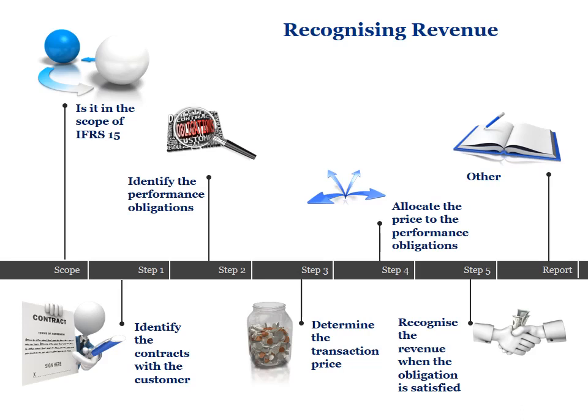Step 1 of the five-step model requires an entity to identify the contract with the customer. It provides the definition of what is a contract and what is the definition of a customer. Step 1 also provides guidance on determining who is acting as principal or agent. Where an entity is acting as principal, they are ultimately responsible for delivering the good or service and are entitled to recognize revenue and costs on a gross basis. If acting as agent, they recognize revenue only as a net amount, representing the commission or margin they are entitled to receive.